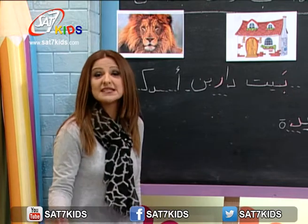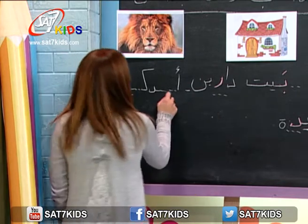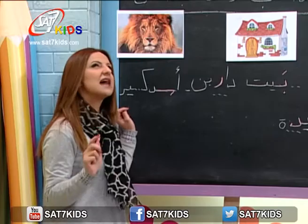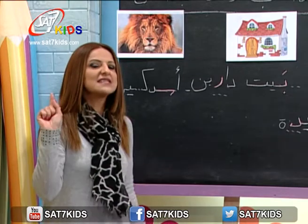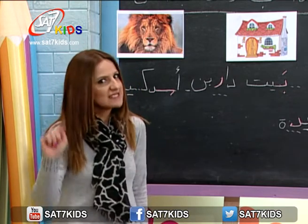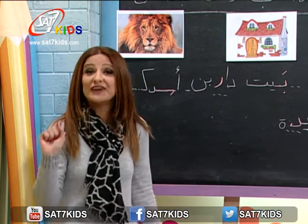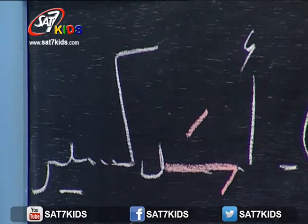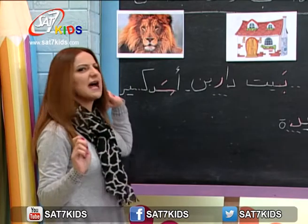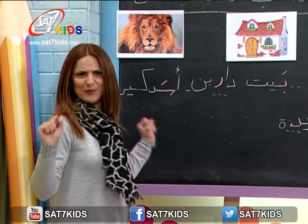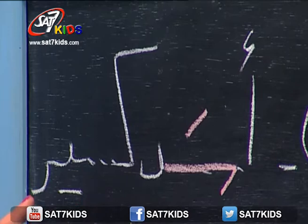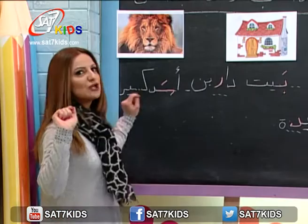أسد. صح، حرف السين. كيف بدي أكتب حرف السين هون؟ متصل مع الألف وكمان متصل مع الدال، يعني بدي أكتبه حرف متصل من جهة واحدة. وهيك بيصير عندي أسد. عم بسمع س، أي صوت؟ صوت قصير أو طويل؟ صوت قصير طبعا، هو الفتحة.